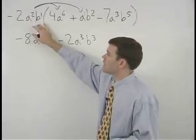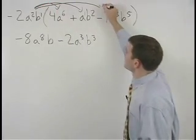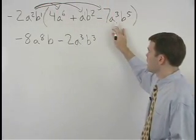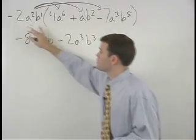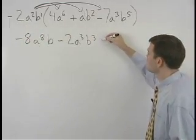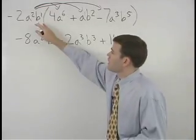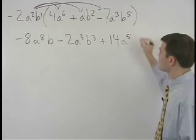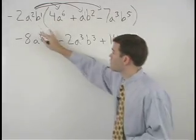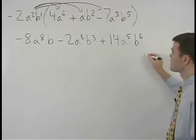Next we multiply negative 2a squared b to the first times negative 7a to the third b to the fifth. So we have negative 2 times negative 7 which is positive 14, a squared times a to the third which is a to the fifth, and b to the first times b to the fifth which is b to the sixth.